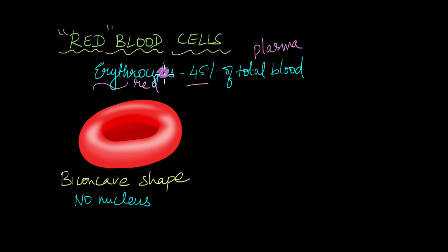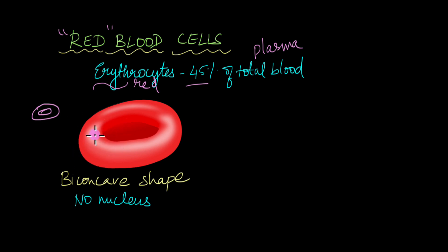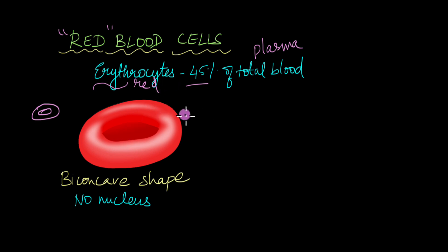So how do these red blood cells look? They have a distinct biconcave shape — they look something like a flattened donut. This biconcave shape is very important because it allows the cell to pick up a lot of oxygen, which is its major role. Also, their small size and this shape allows them to pass easily through the blood vessels and capillaries to reach every single cell in the body.